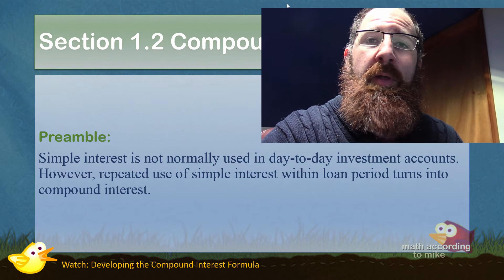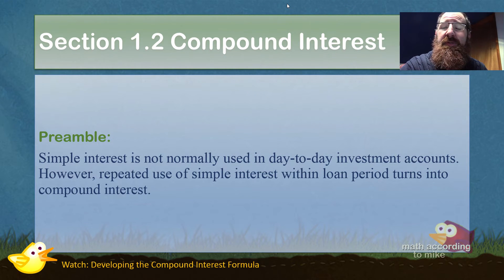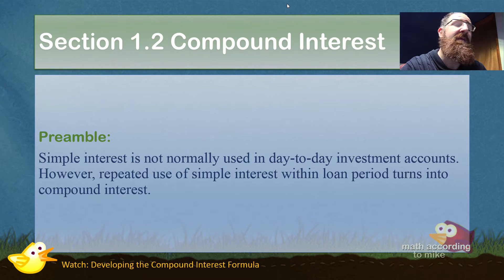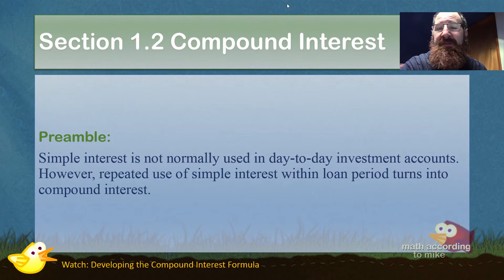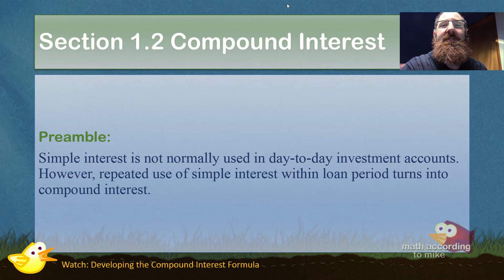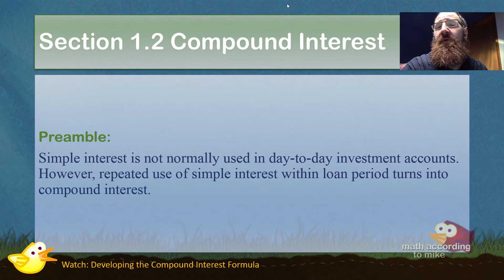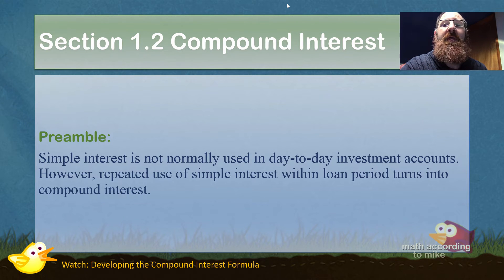Let's begin section 1.2: compound interest. Simple interest is only for when you compute interest once for the entire length of a loan. It is not generally used for your day-to-day operations like savings and checking accounts — those use different types of interest. For a typical savings account, you might earn interest every month or every quarter, depending on the scenario.